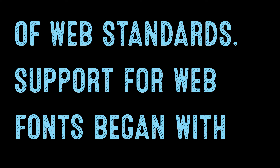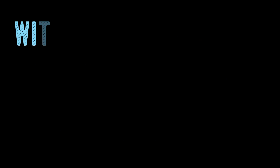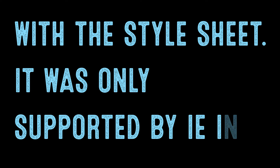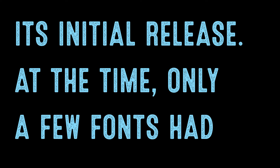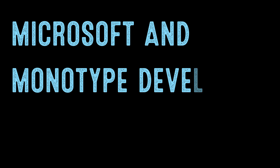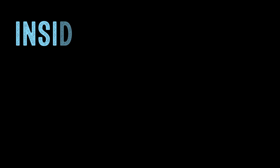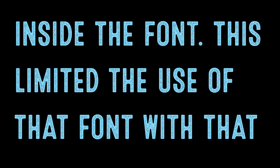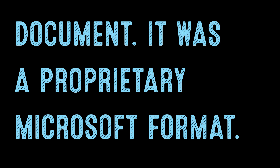Support for web fonts began with CSS2 with the ability to embed fonts by providing the font with a style sheet. It was only supported by IE in its initial release. At the time, only a few fonts had a copyright that allowed distribution on the web. Microsoft and Monotype developed a font format called EOT — Embedded OpenType — which contained the URL inside the font. This limited the use of the font with that document, and it was a proprietary Microsoft format.